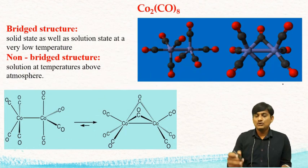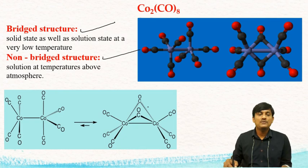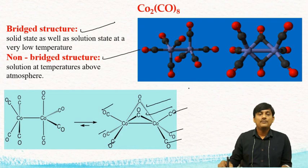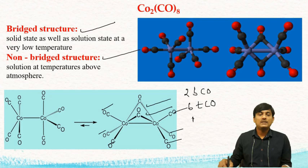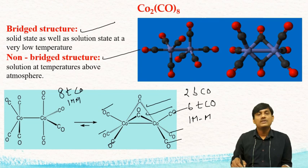Let us take the Co₂CO₈ structure. Cobalt has 2 structures: one bridged and one non-bridged. In the bridged structure, there are 2 bridged CO ligands and 3 terminal CO ligands on each cobalt, giving 2 bridged COs, 6 terminal COs, and 1 metal-metal bond. In the non-bridged structure, all COs are terminal, giving 8 terminal COs and 1 metal-metal bond.